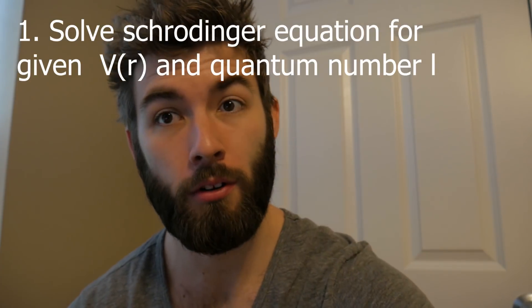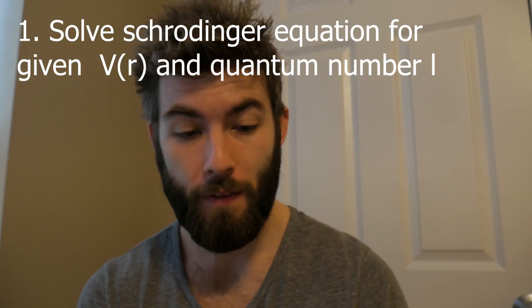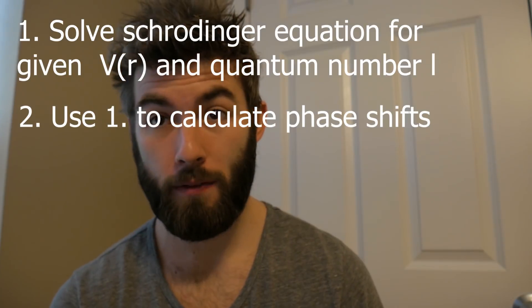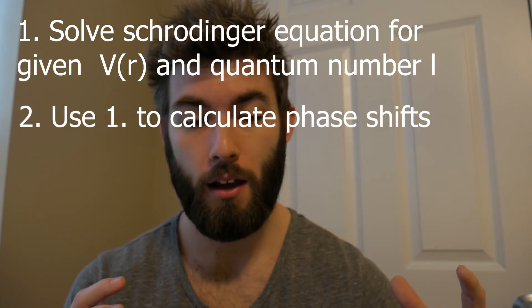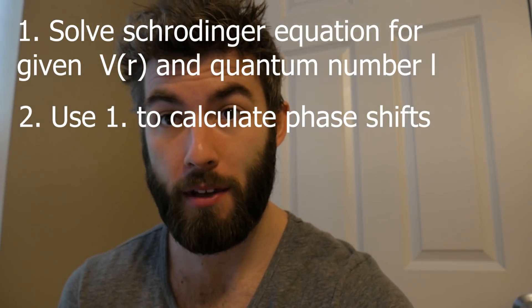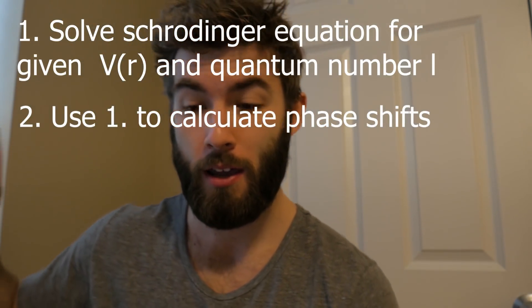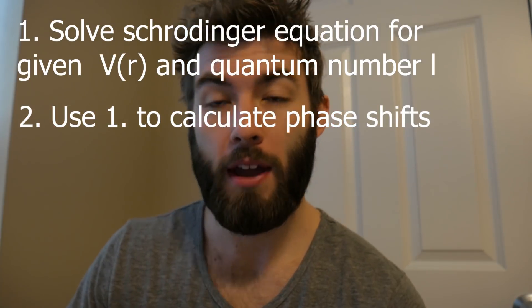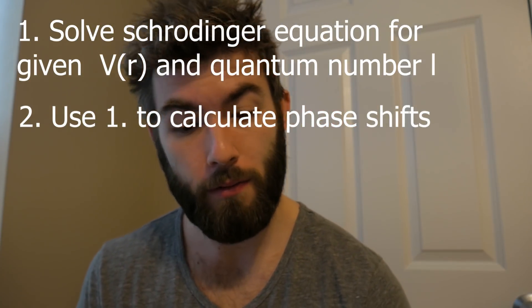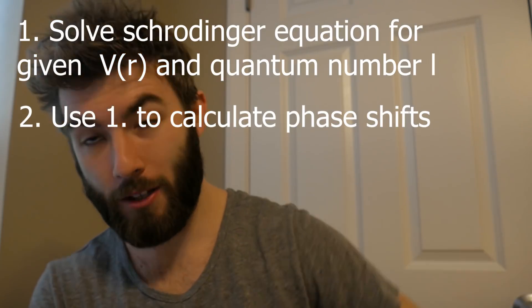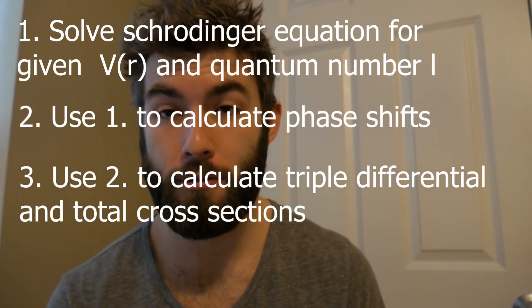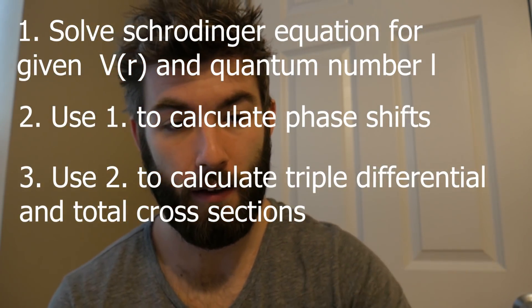Just to recap everything I've had to do for this thesis: I had to solve the Schrödinger equation for a given potential. That potential was then used to find the phase shift of the wave function — you take the asymptotic behavior and go a little bit further, which should also be explained by the asymptotic behavior, and through that you can get the phase shift. Then by using the phase shift, you can calculate things like the total cross-section or the differential cross-section. And that's pretty much where I'm at right now.